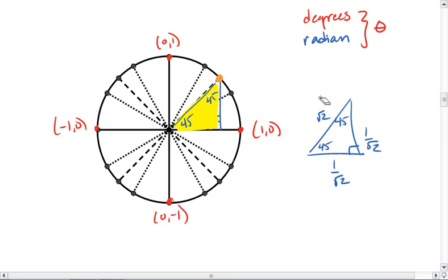So we get 1 over root 2, 1 over root 2, 1. But we don't like having roots in our denominator. We multiply by root 2 over root 2, and that gives us root 2 over 2.